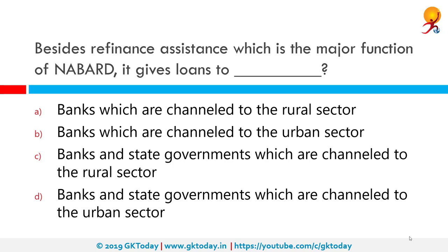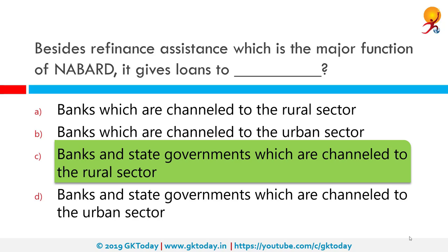Besides refinance assistance, what is the major function of NABARD — to which entities does it give loans? The correct answer is banks and state governments, which are channeled to the rural sector. NABARD has been instrumental in grounding rural social innovations and social enterprises in the rural hinterlands, partnering with about 4,000 partner organizations in many interventions, including SHG-bank linkage programs, tree-based tribal community livelihoods, watershed approach and soil and water conservation, increasing crop productivity through crop initiatives, and dissemination of information to agrarian communities through farmer clubs.